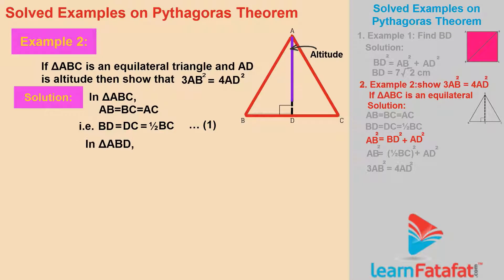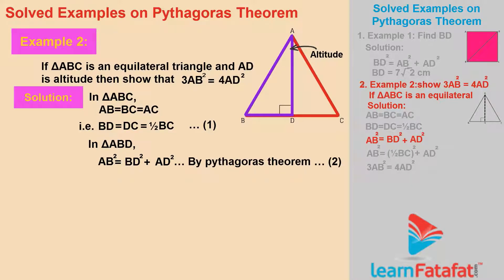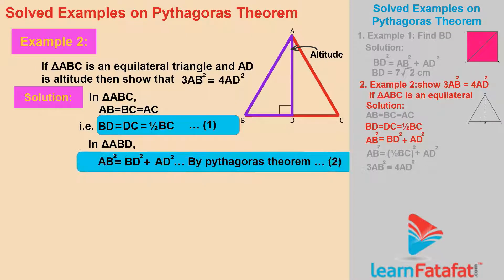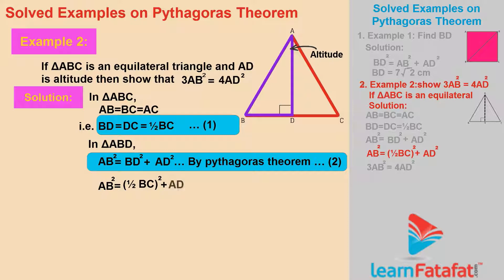In triangle ABD, AB² = BD² + AD² by Pythagoras theorem. This is equation 2. From equations 1 and 2 we get: AB² = (1/2 × BC)² + AD².